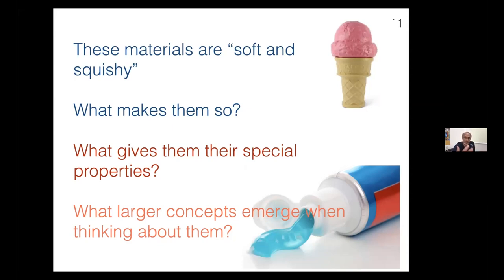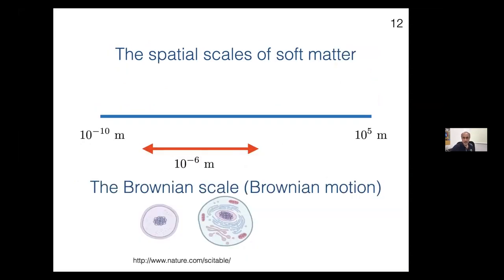The first question is: what are the spatial scales of soft-matter systems? It's very broad — it makes sense to talk of numbers from 10 to the power minus 10 meters, which is the Angstrom scale, the size of an atom. On the other hand, you go all the way to 10 to the 5 meters — the scale of mountains and Earth — because these are objects that flow given large enough forces. But much of the interest comes from around 10 to the power minus 6 meters, which is one micrometer, called the Brownian scale.